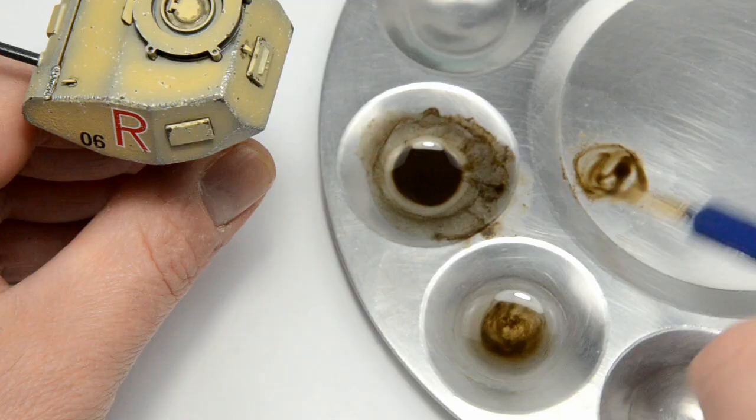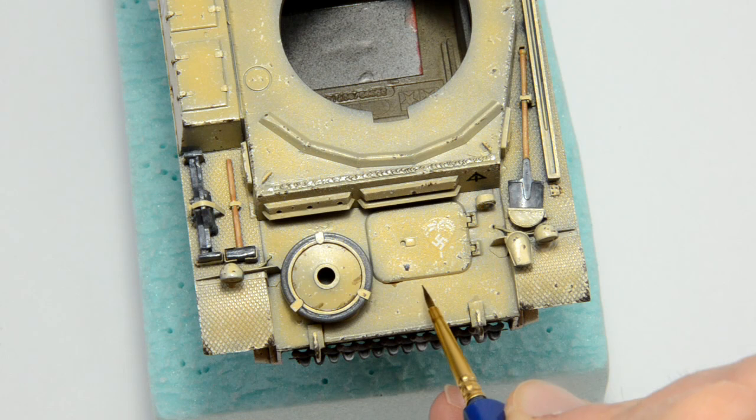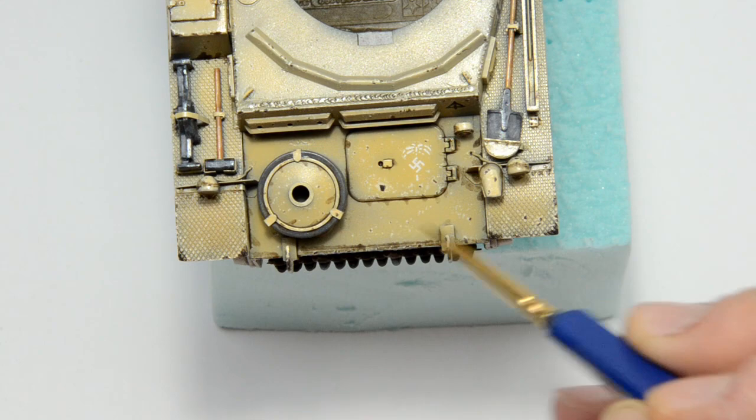You can see how the glossy surface is helping the wash to flow freely. For the welds for example, I thinned down the wash even more. I was talking about selective pin washing, because I only applied it around the details. That way, you have less to clean later, and only the details will pop out.